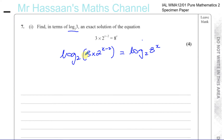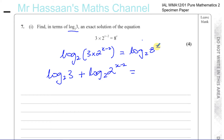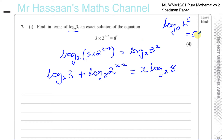Now I can split this up into two parts because this is a product. So I can write log to the base 2 of 3, plus log to the base 2 of 2 to the power of x minus 2, equals — and now I can write this as x times log to the base 2 of 8. I'm using the law of logarithms — the power law: log to the base a of b to the power of c is equal to c times log to the base a of b.